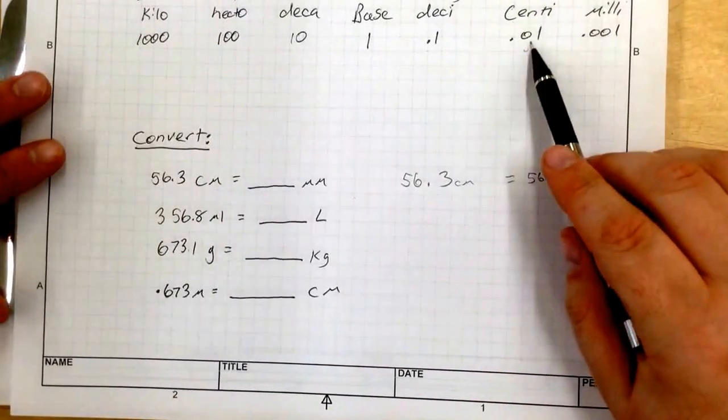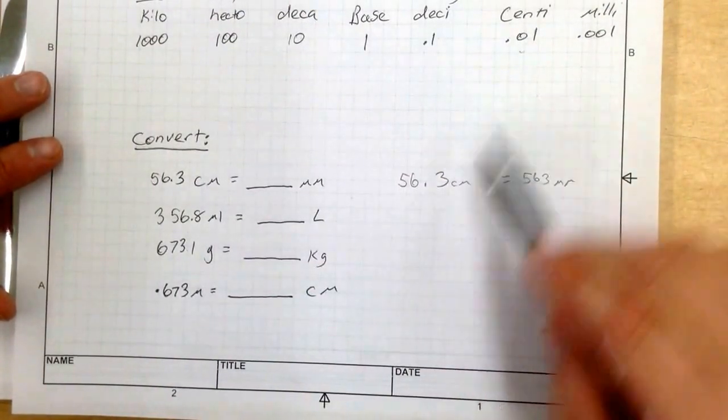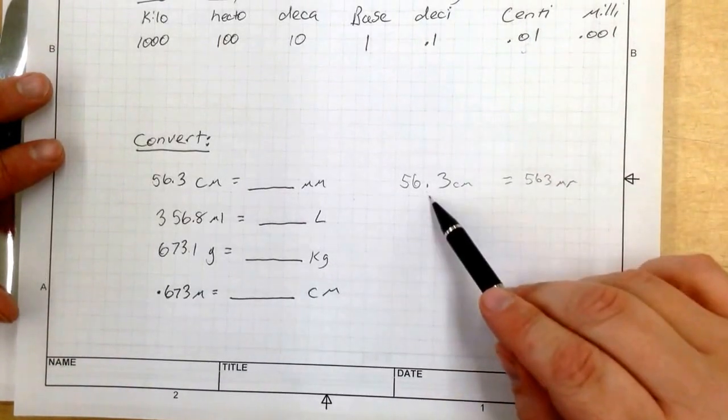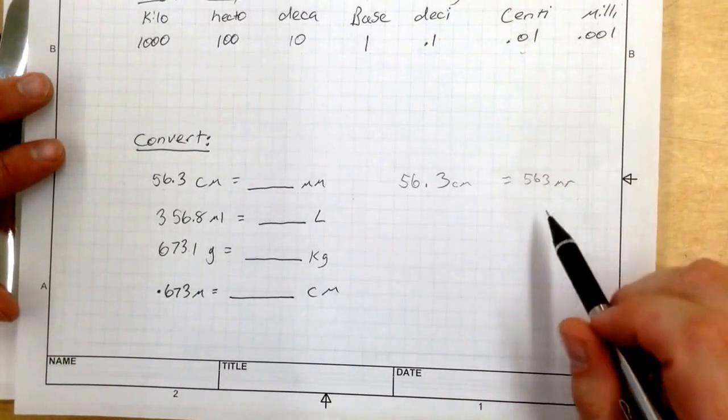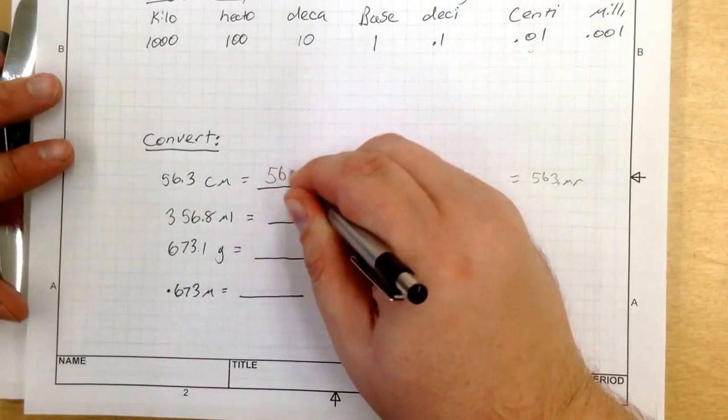So to watch that again, here is centi. Our base unit is centimeter. 56.3 centimeters. It's one unit over. So I move my decimal point one unit over. So it becomes 563 millimeters.